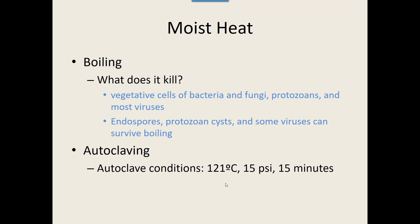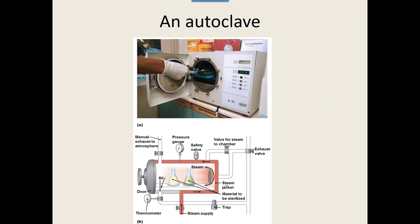There are different sizes of autoclaves — this shows a tabletop one, but we have one on the second floor of this building. Right next to where you keep your lab coats is that big, massive silver machine. That is a large autoclave for when we need to autoclave a lot of material.